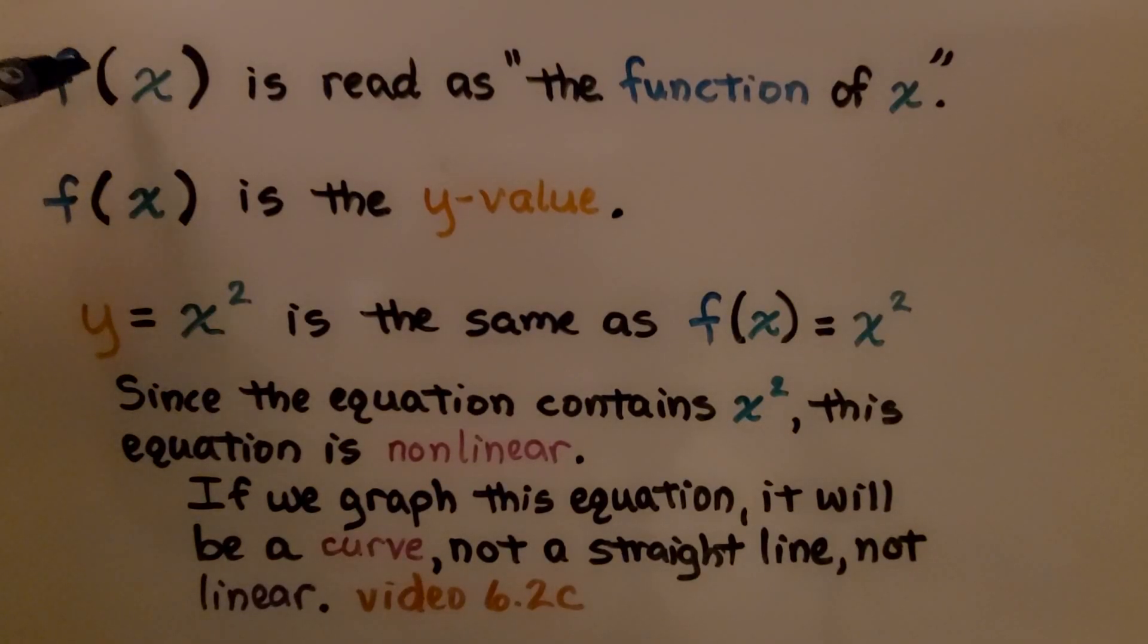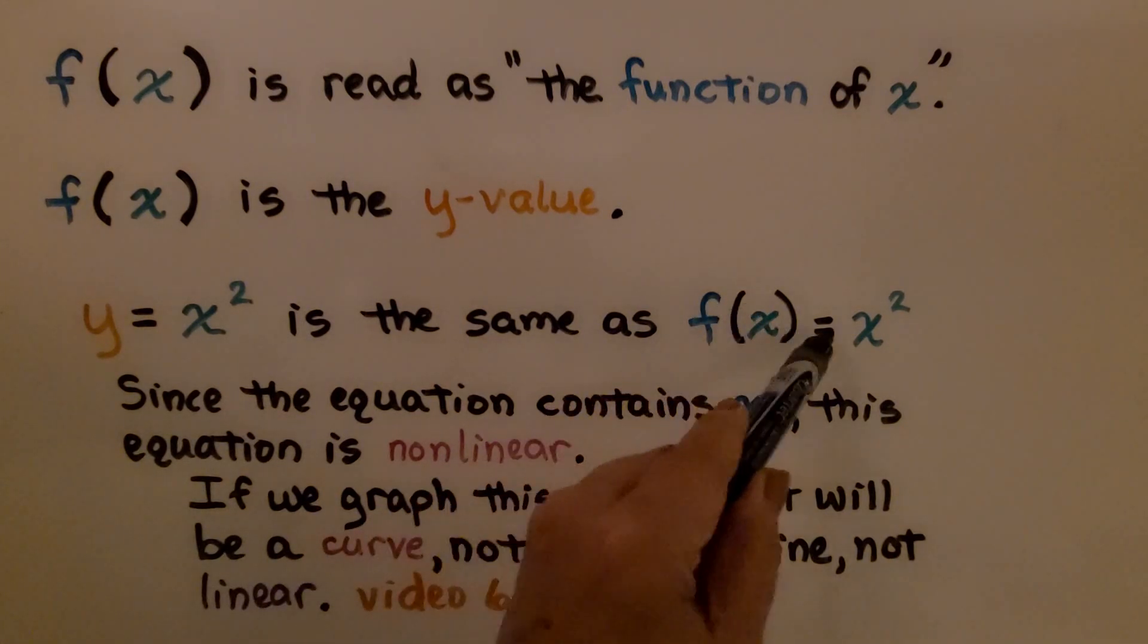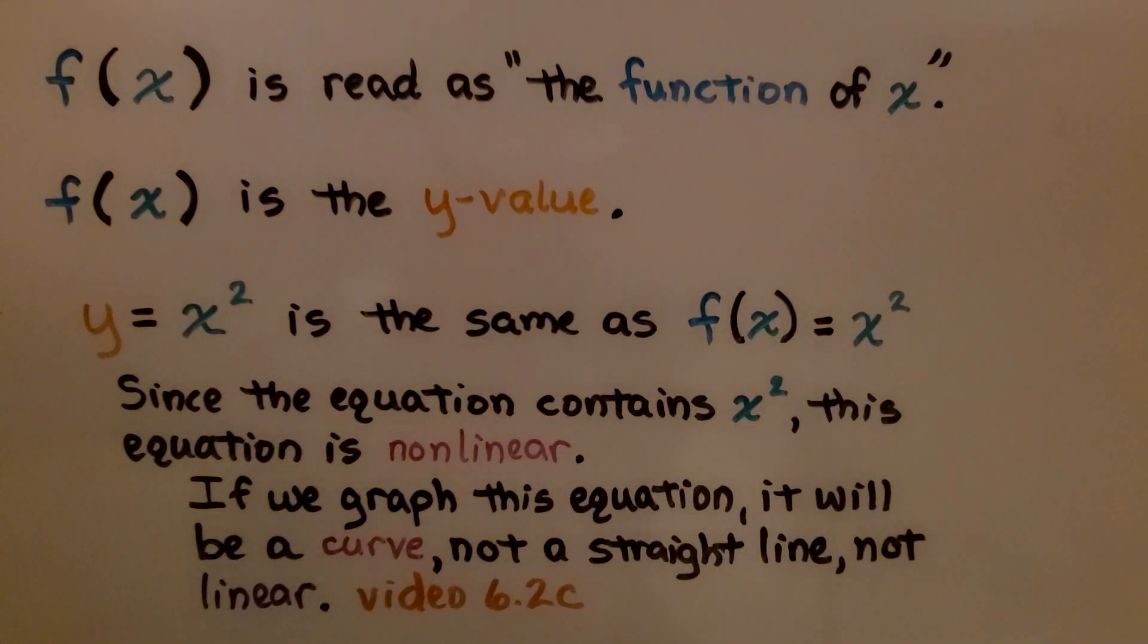Here we have an f next to an x in parentheses. This is read as the function of x, or f of x. f of x is the y value. We have y equals x squared, which is the same thing as f of x equals x squared.